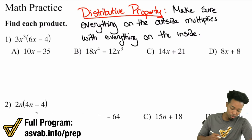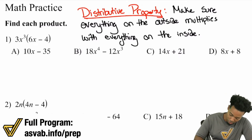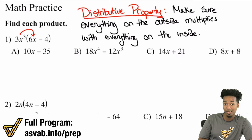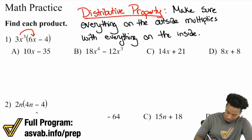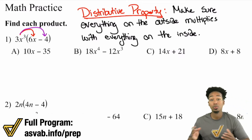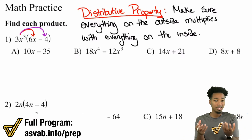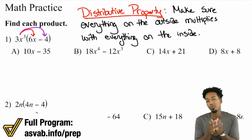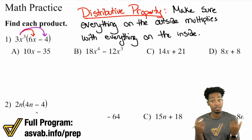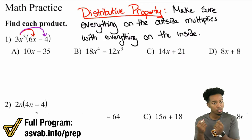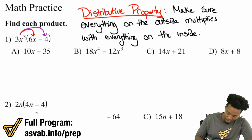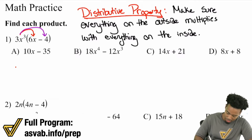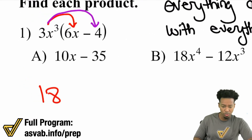What we mean is: you have three X cubed on the outside. You need to make sure that three X cubed multiplies with the six X, and also that it multiplies with the negative four. That's really it — making sure it multiplies with everything on the inside. Now, to understand how to multiply these things together, we need to know how to handle exponents and variables. If you're multiplying two terms with the same variable, you're going to add those exponents.